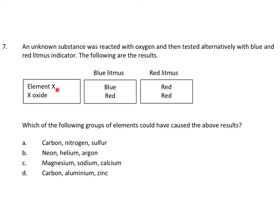Element X is blue in blue litmus and red in red litmus — that means it hasn't changed. It's not acid, not base, it's neutral.